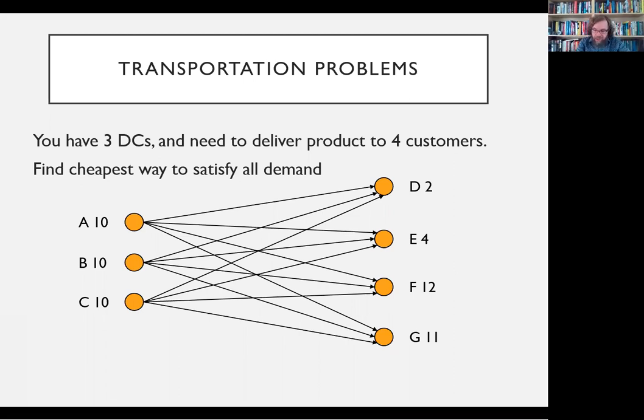Obviously these sources and these destinations would be all over a map, literally, but it's just easier if we draw them where we have the origins on the left and the sources on the right. And then the numbers represent the demands for the customers on the right and the supply for the suppliers on the left.